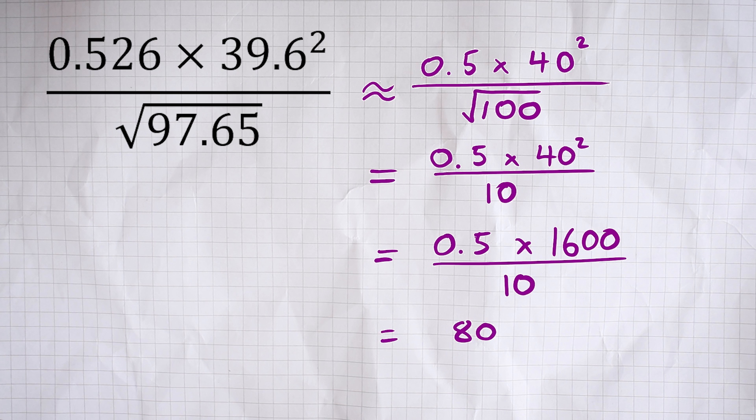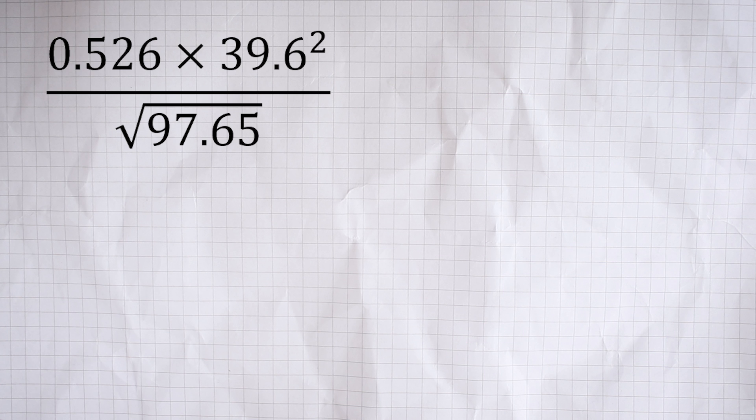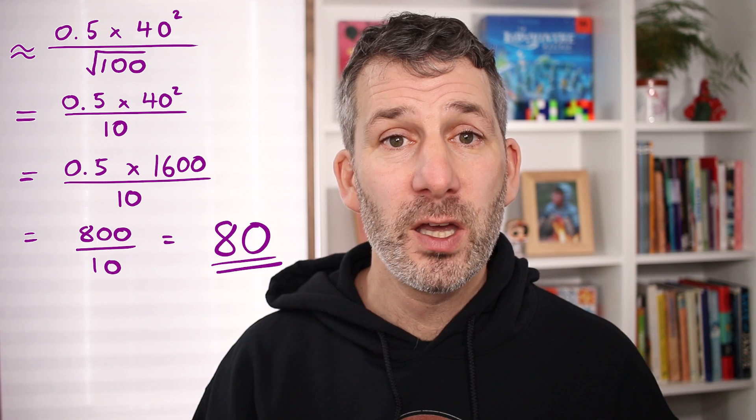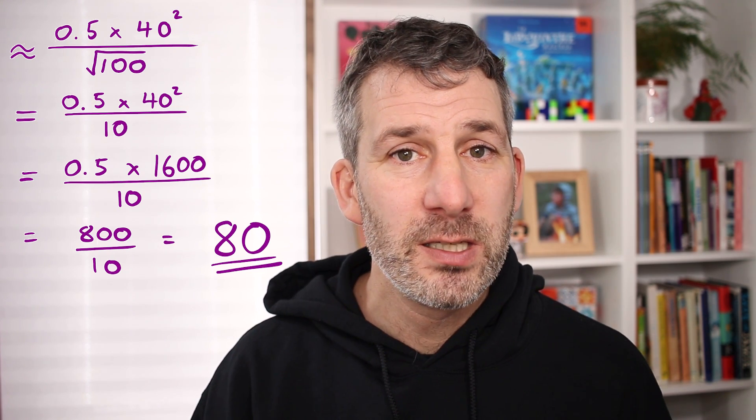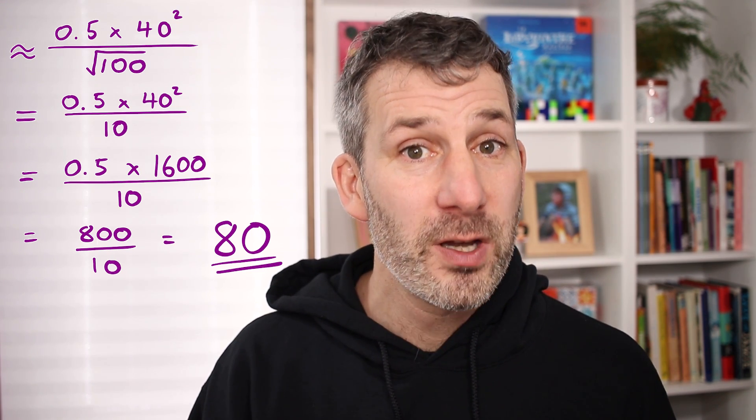So we've got 800 divided by 10. Well, 800 divided by 10 is just 80. So once you've rounded off each of the numbers in the question to one significant figure, suddenly it becomes a lot easier. Certainly a lot easier than it first appears.